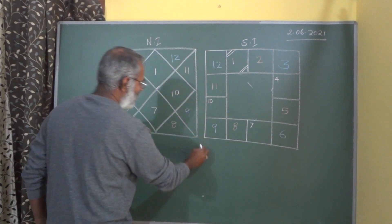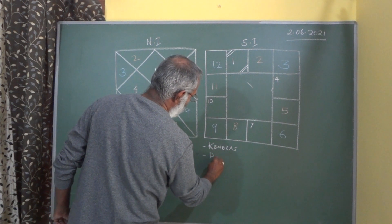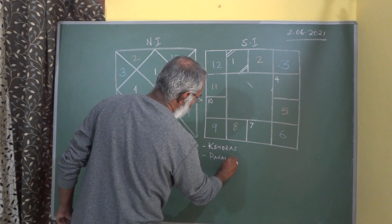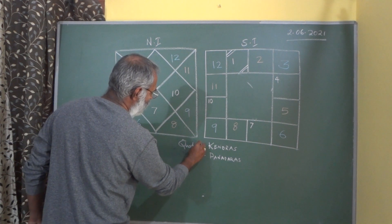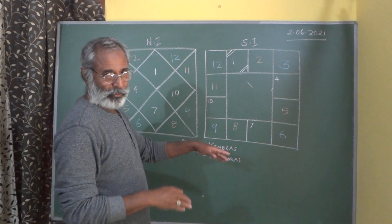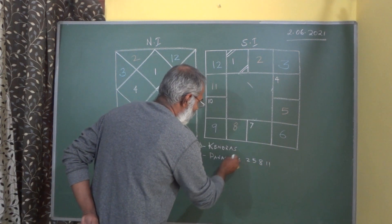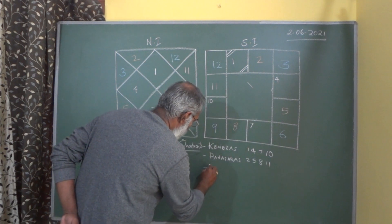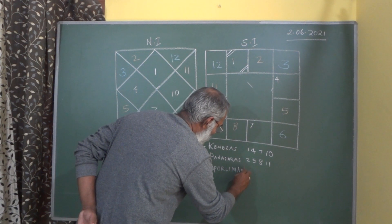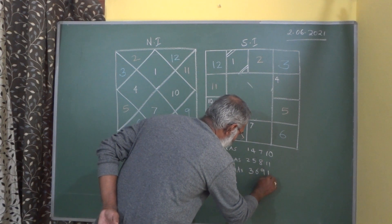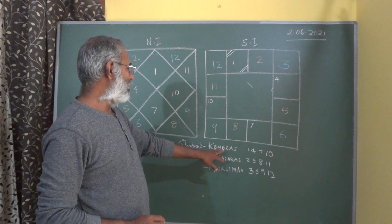The 1st set is known as the Kendras — all are called quadrants. The 2nd set of quadrants is known as the Panaparas — they are the 2nd, 5th, 8th and 11th. The Kendras are 1, 4, 7, 10. Then the Apoklymas — they are the 3rd, 6th, 9th and 12th house. I have written these in different colors for you to easily understand.